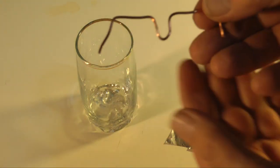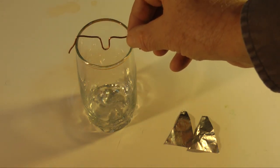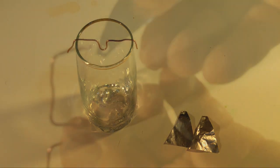Next, bend the wire like this, so that it hangs suspended in the glass. The bottom of this metal cradle will hold the aluminum leaves.